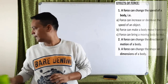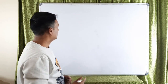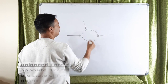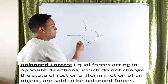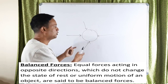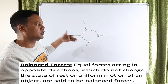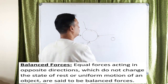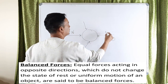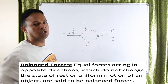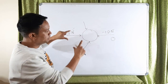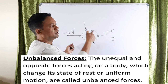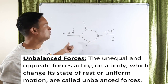Now let's look at balanced and unbalanced forces. If a number of forces are acting on a body and they cannot bring about any change in its state of rest or uniform motion — meaning speed and direction don't change — those forces are called balanced forces, and the net resultant force is zero. For example, a 10 newton force on one side and 10 newton on the other side cancel out, giving a resultant of zero.